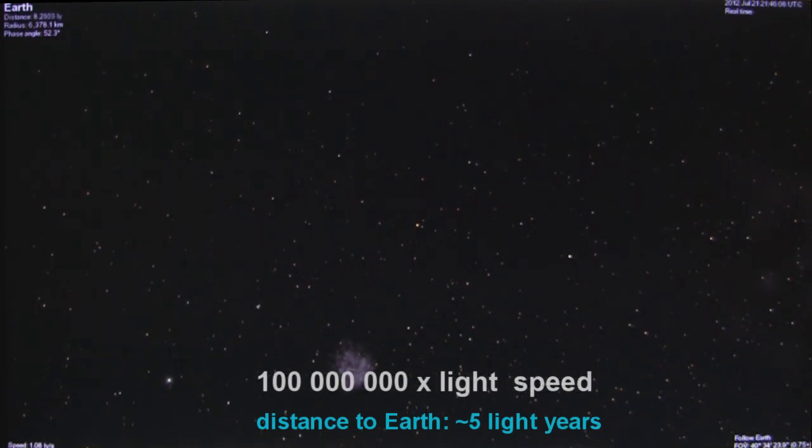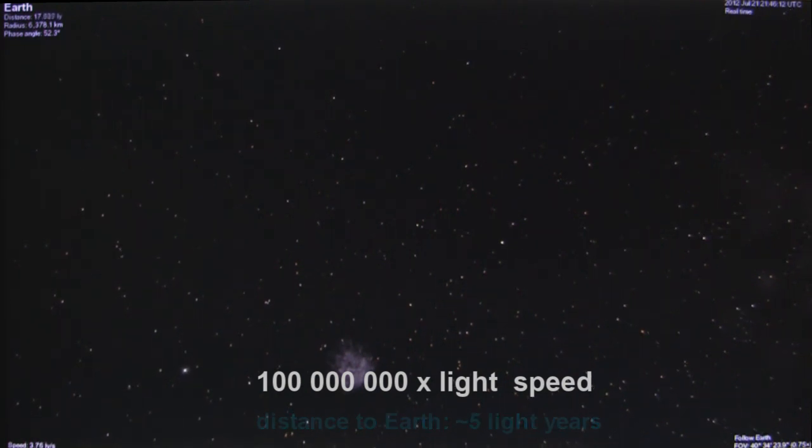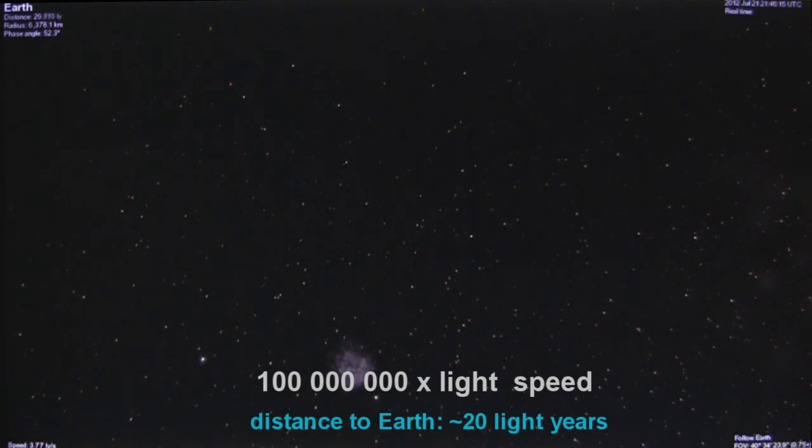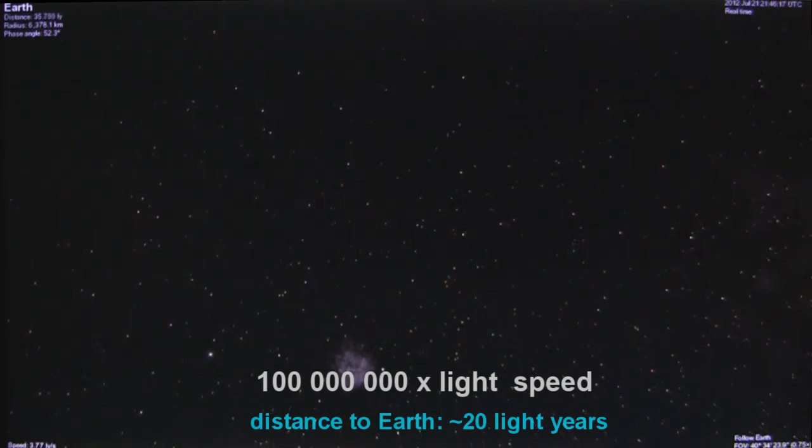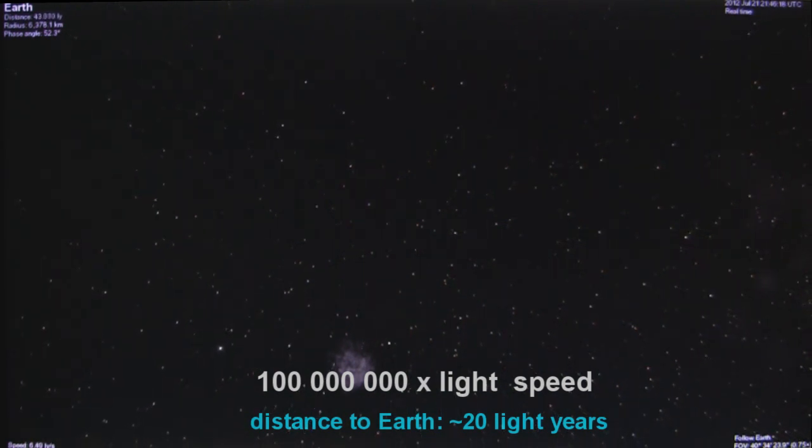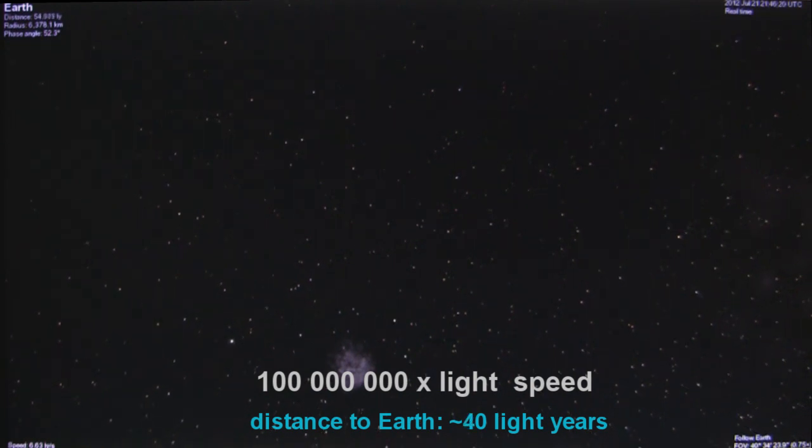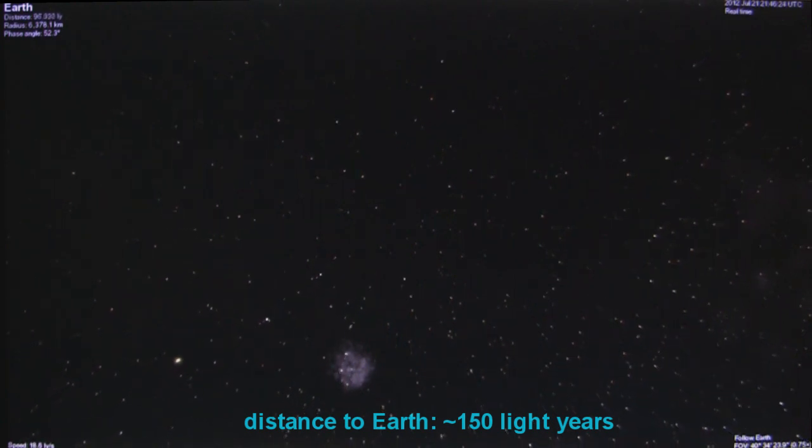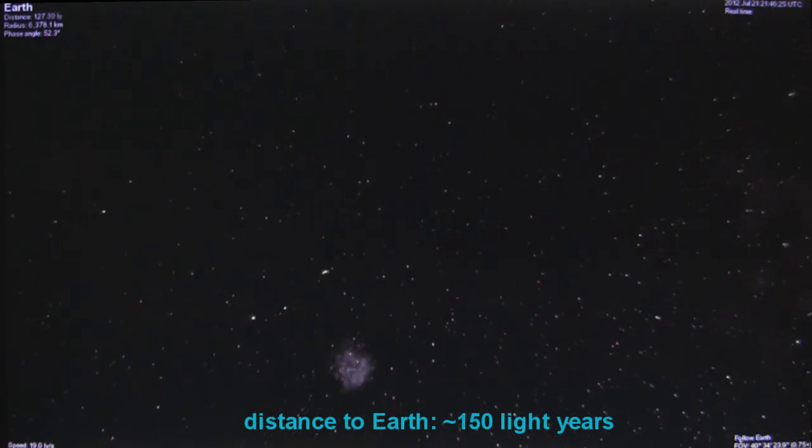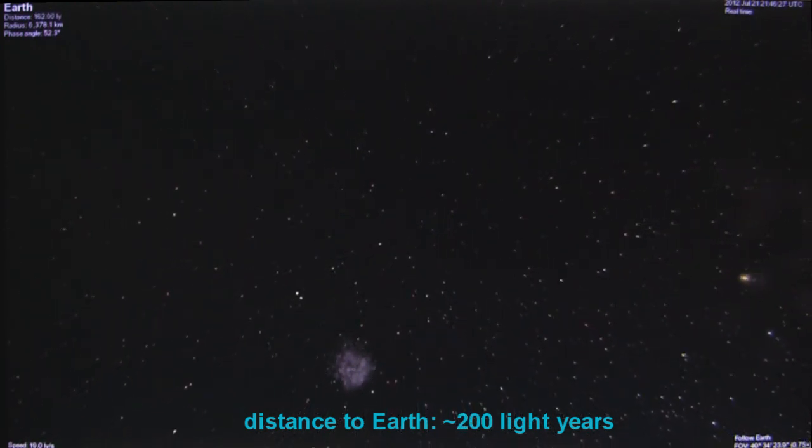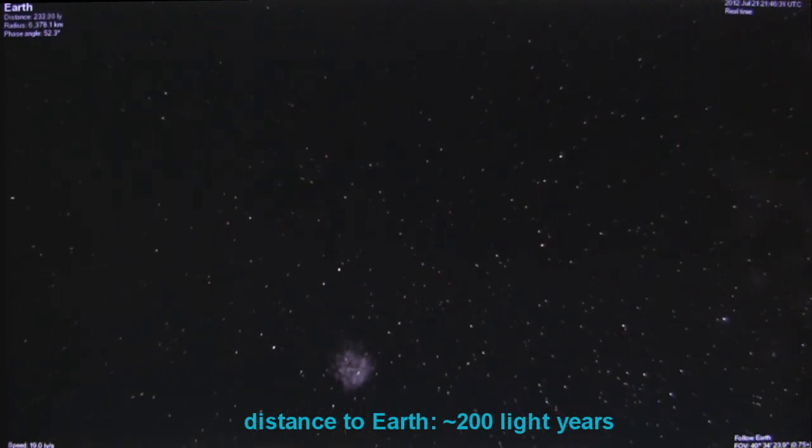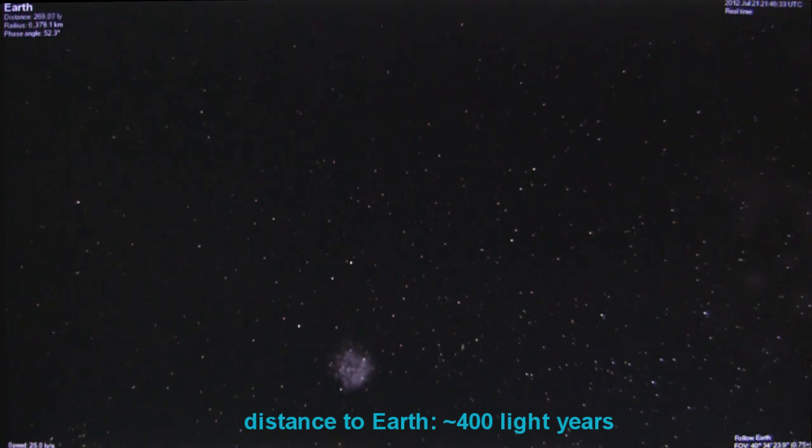100,000,000 times the speed of light. That's about three light years in one second. We are now crossing the first light that escaped from the monitors of the first internet users. And then shortly afterwards, the last radio signals from the last men to walk on the moon. This is now how far the light from Edison's first electric light bulb will have reached. This is now the candles coming from the founding fathers as they worked on the Declaration of Independence. The light from 400 years ago.